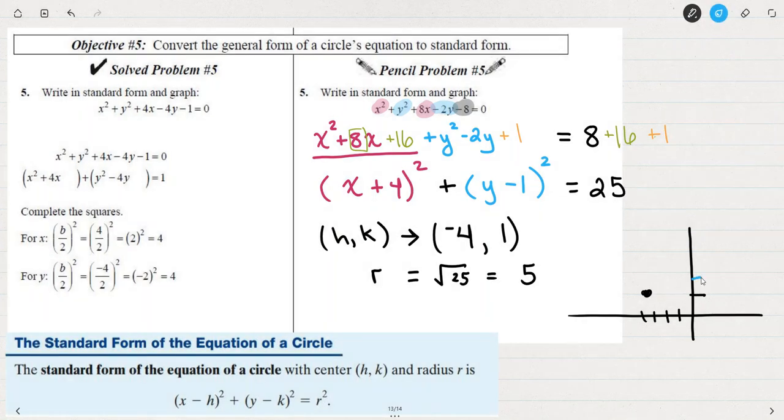And using the radius of 5, counting 1, 2, 3, 4, 5 in each direction, I can get these 4 points on the circle. So there's the 4 points on the circle. And then I can draw the circle that goes through those points. And that's the graph of the circle.